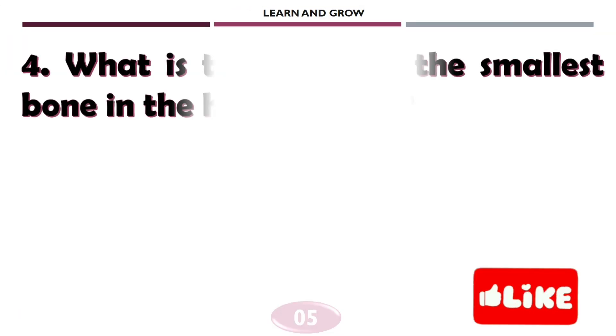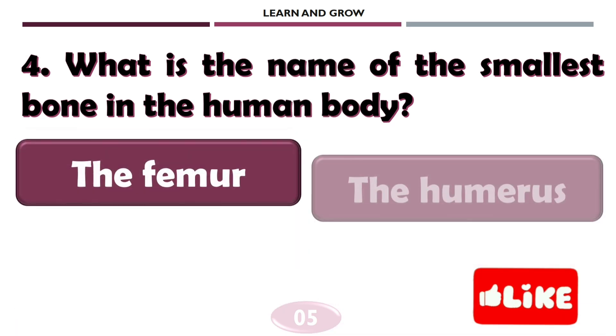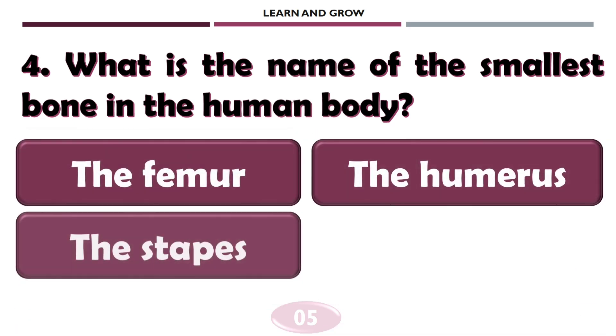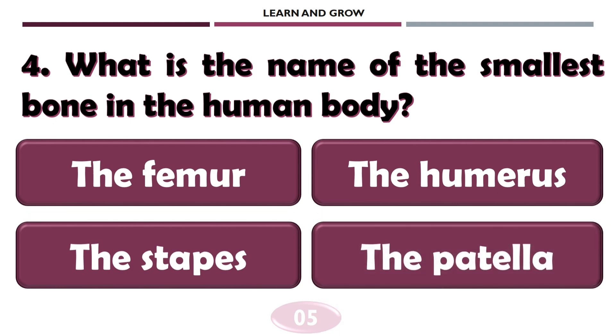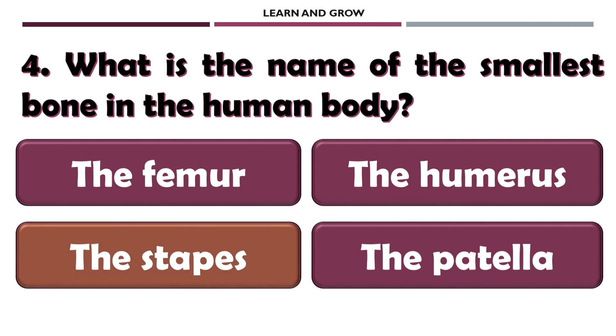What is the name of the smallest bone in the human body? The smallest bone in the human body is the stapes.